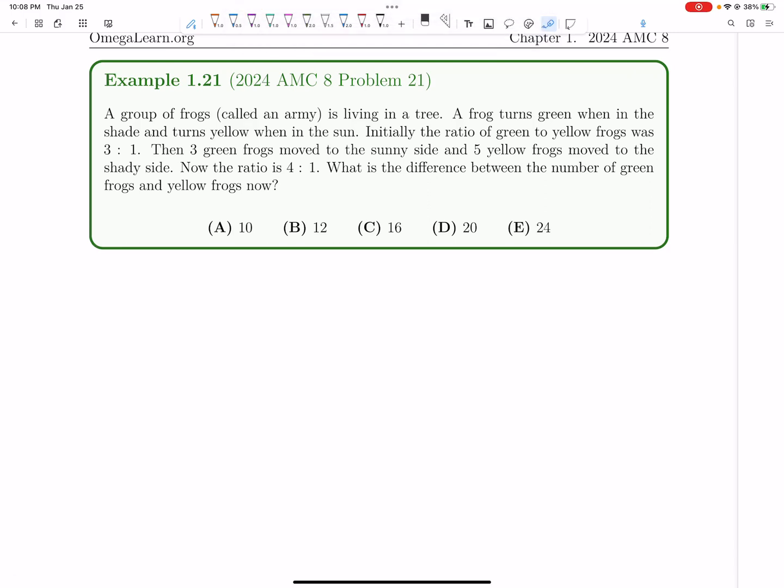Let's now explore how to solve number 21 on the AMC 8. An army of frogs is living in a tree. A frog turns green when it's in the shade and yellow in the sun.